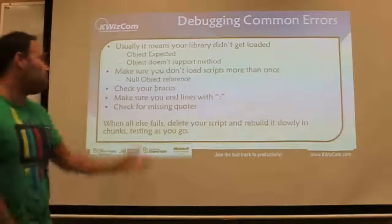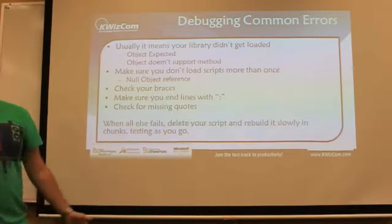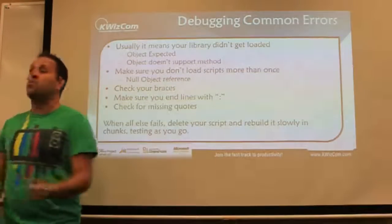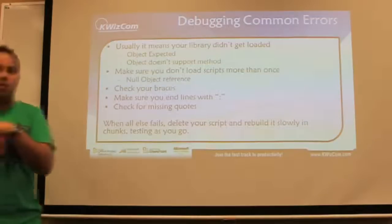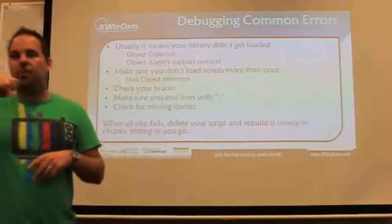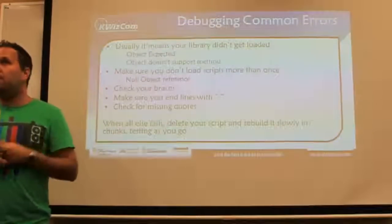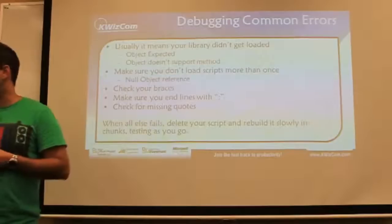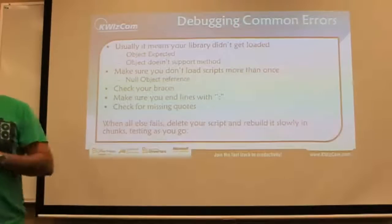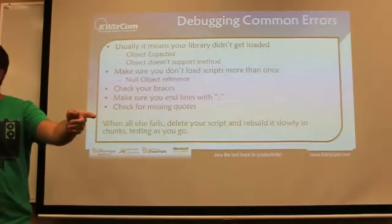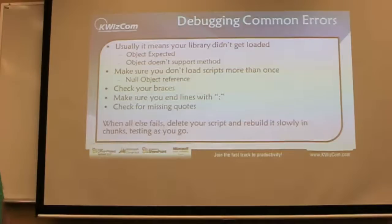We're all familiar with common errors. Usually if you get an 'object expected' error or 'object doesn't support method,' your library probably didn't load. Make sure you don't load scripts more than once — this is actually crucial when it comes to jQuery. jQuery uses the dollar sign for its token, which may collide with other things. One time I found this happen in SharePoint was in a picture library — it also uses the dollar sign token and you get collisions. So try to only load it once.